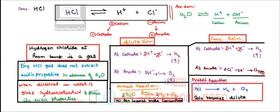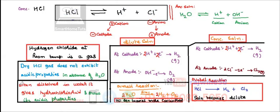Dry HCl gas does not exhibit acidic properties in absence of water, meaning this splitting is not going to take place. So it is not going to be a conductor of electricity, and there is no question of electrolysis. Only when dry hydrogen chloride gas is dissolved in water does it give hydrochloric acid and show acidic properties. So these things are applicable only if water is present; if water is not there, electrolysis is not possible.